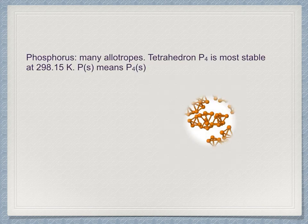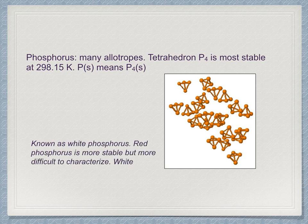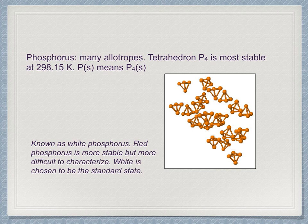Phosphorus is similarly exceptional, as it too has many allotropes. The standard state is chosen, by convention, to be the alpha phase of white phosphorus, even though it is not the most stable phase. This is the one major exception to the rule — red phosphorus is more stable, but it is more difficult to characterize. White phosphorus consists of a collection of P4 molecules bonded in a tetrahedron, and several tetrahedrons crystallized into a body-centered cubic structure. Therefore, the standard state is commonly written as P4 solid, referring to this white phosphorus phase.